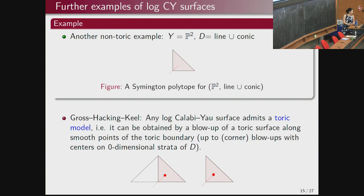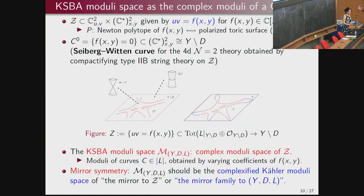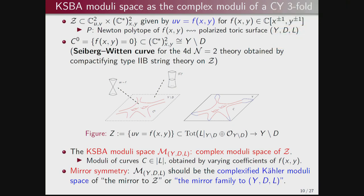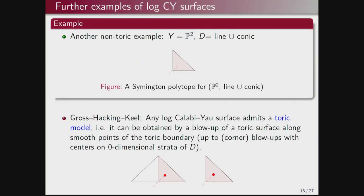Gross-Hacking-Keel showed that any log Calabi-Yau surface has a toric model — it can be obtained as a blow-up of a toric surface at smooth points on the toric boundary — up to some corner blow-ups. So there is always an associated Symington polytope realizing the base of an almost toric fibration on your log Calabi-Yau surface. In the toric setup Y minus D was just a torus; here, as shown by Gross-Hacking-Keel, the complement is not a torus but a cluster variety.